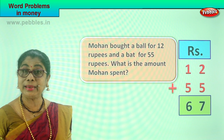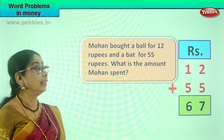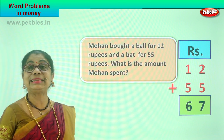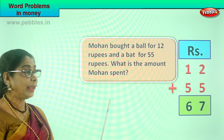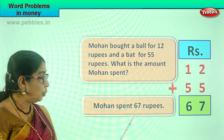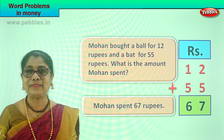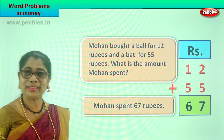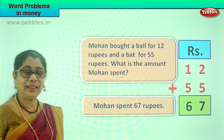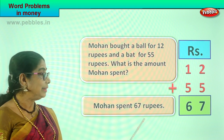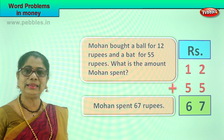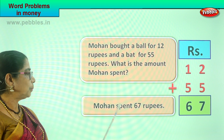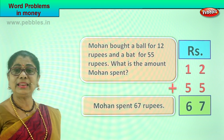Mohan spent 67 rupees for a ball and a bat. Did you enjoy the problem? Did you like shopping? Going shopping with Mohan? So Mohan told dad, please give me 67 rupees, and dad gives him 67 rupees and he gives it to the shopkeeper. Mohan spent 67 rupees for a bat and a ball.